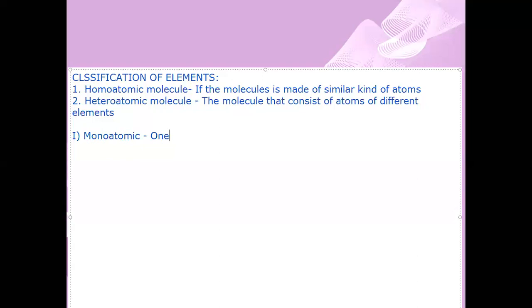For different kinds of elements with two atoms, that is heteroatomic diatomic molecules. With three atoms, it is heteroatomic triatomic molecules. And with more than three atoms, it is heteroatomic polyatomic molecules.